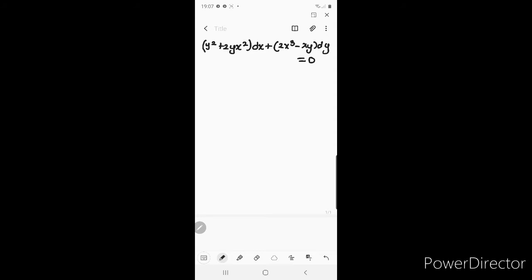Now let me take a standard example to see when the first two rules are not applicable. So the equation is y² + 2yx² dx + (2x³ - xy) dy = 0.